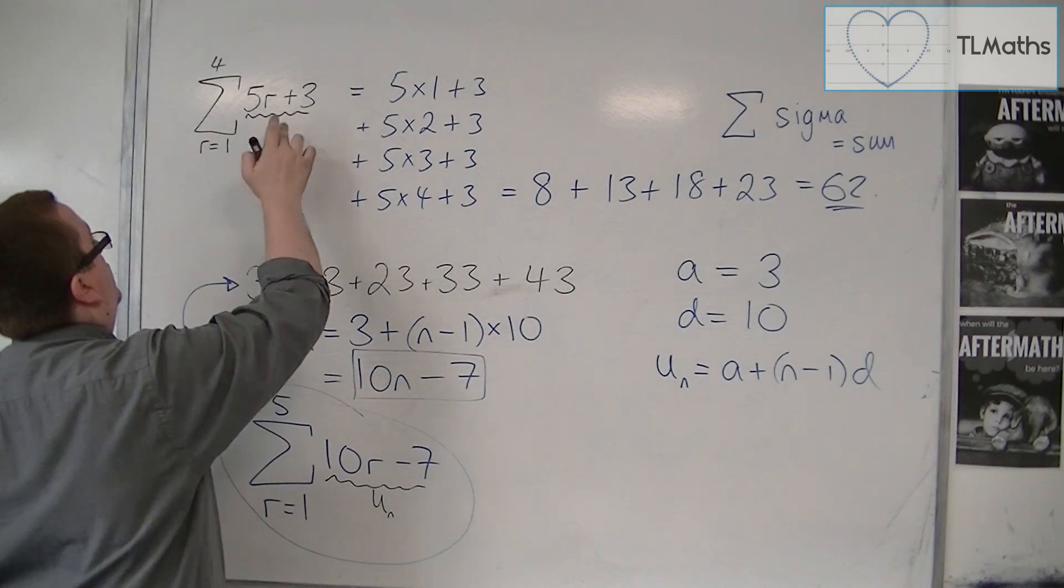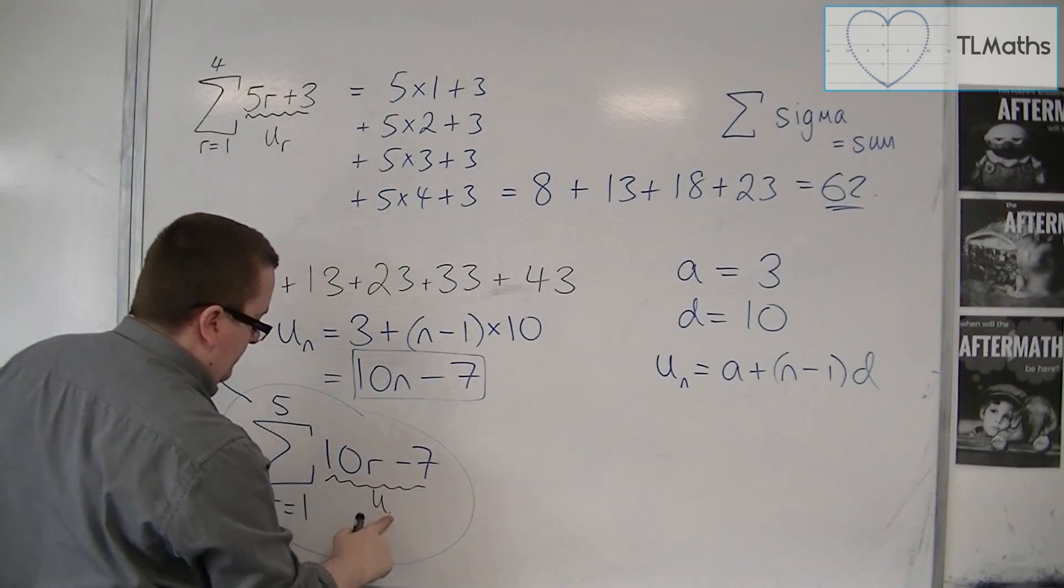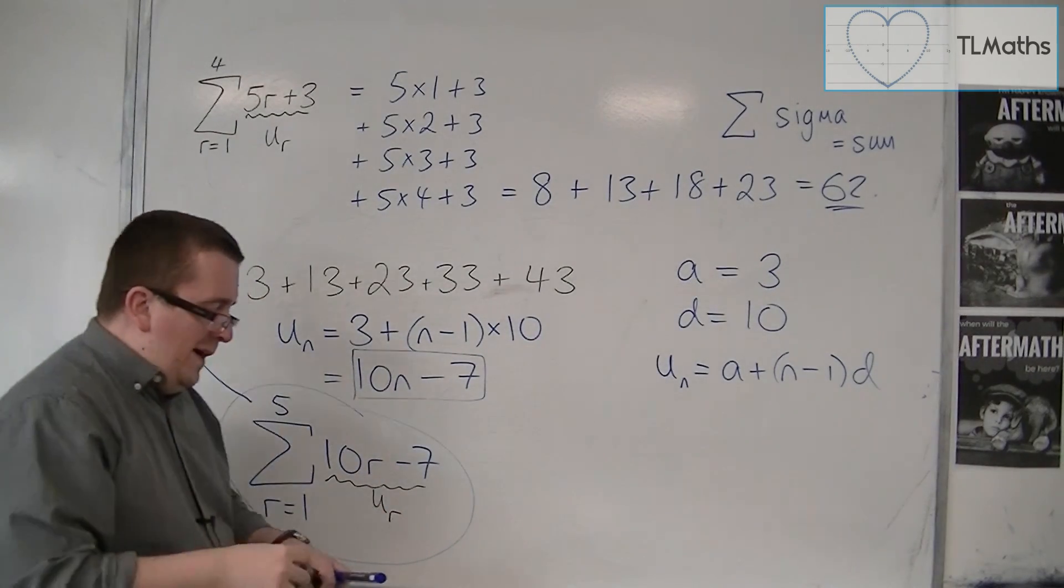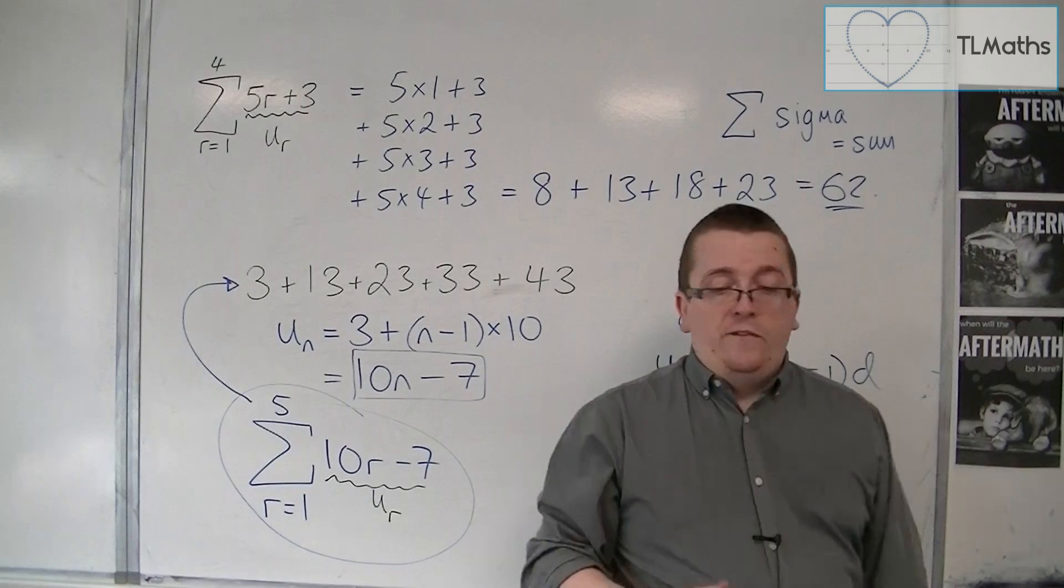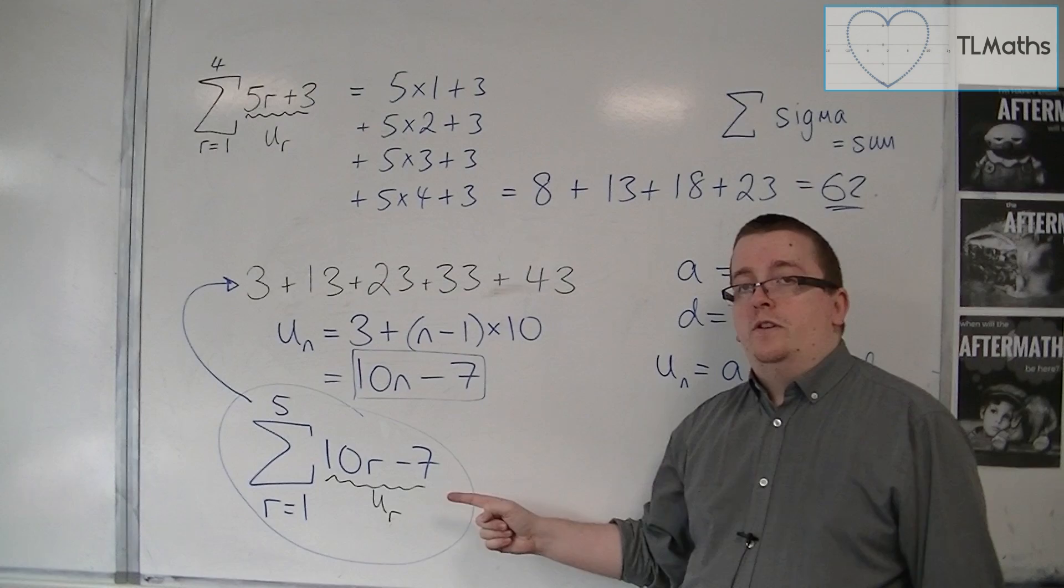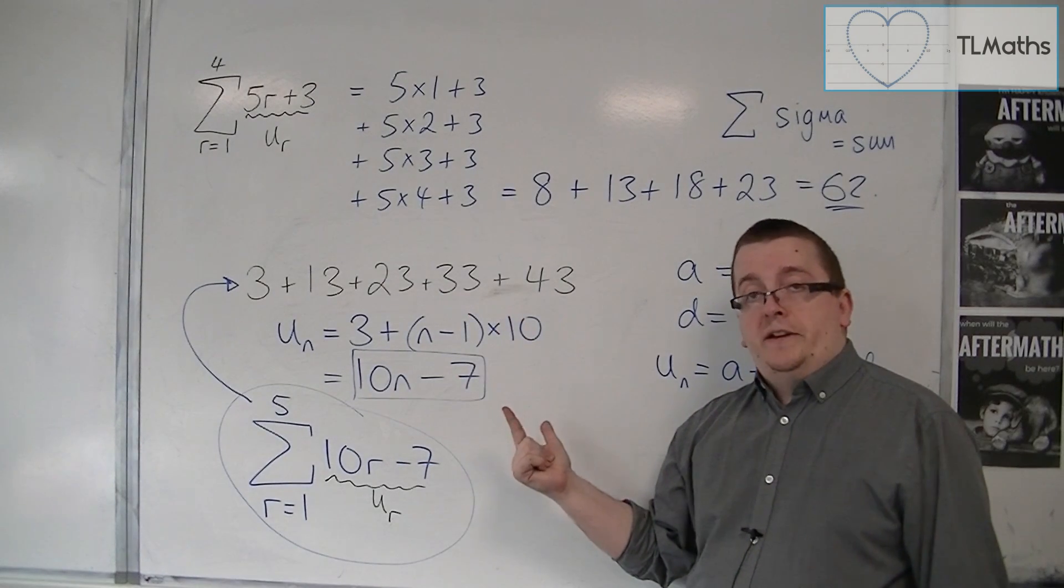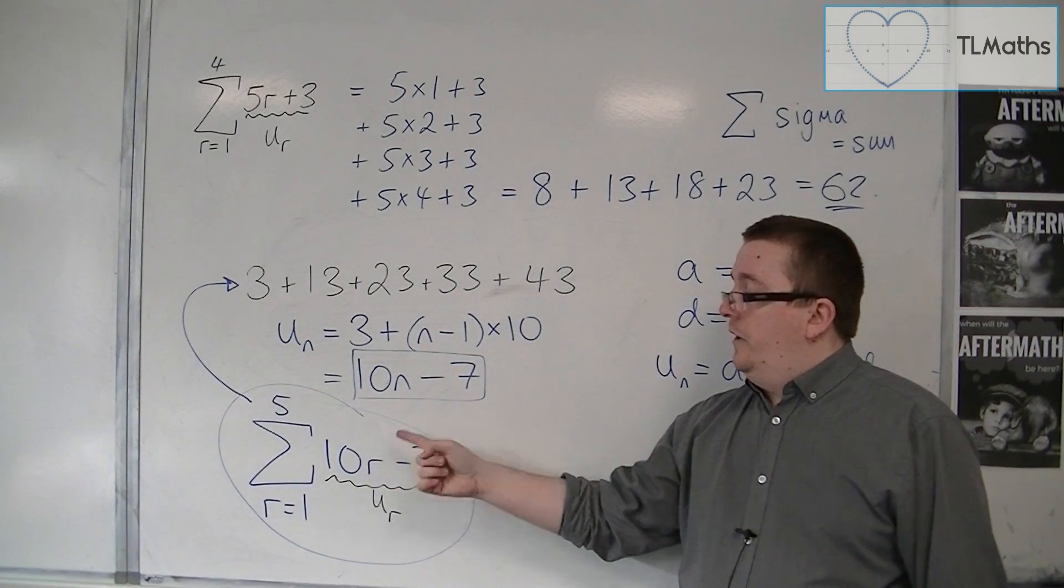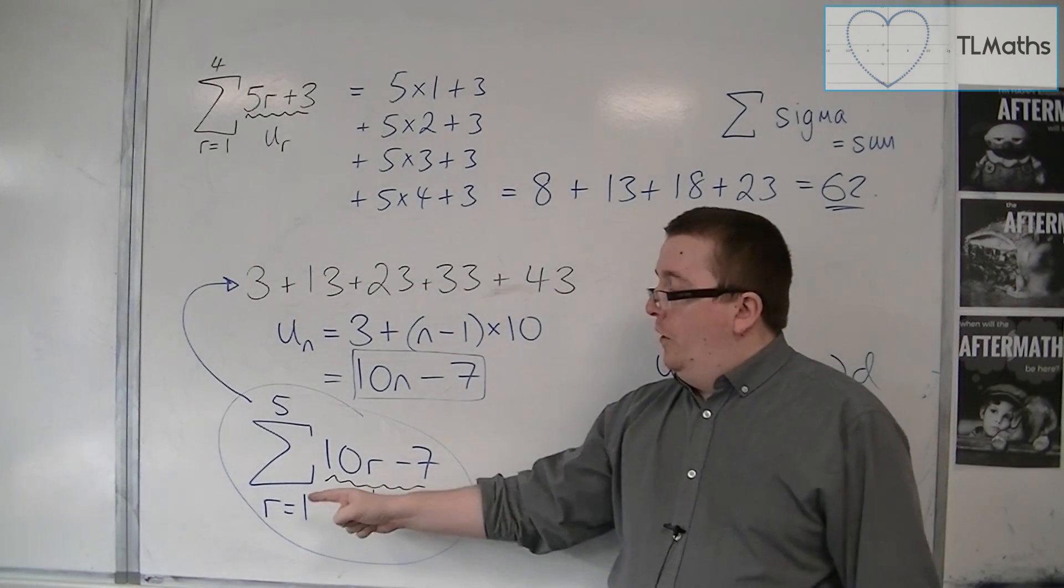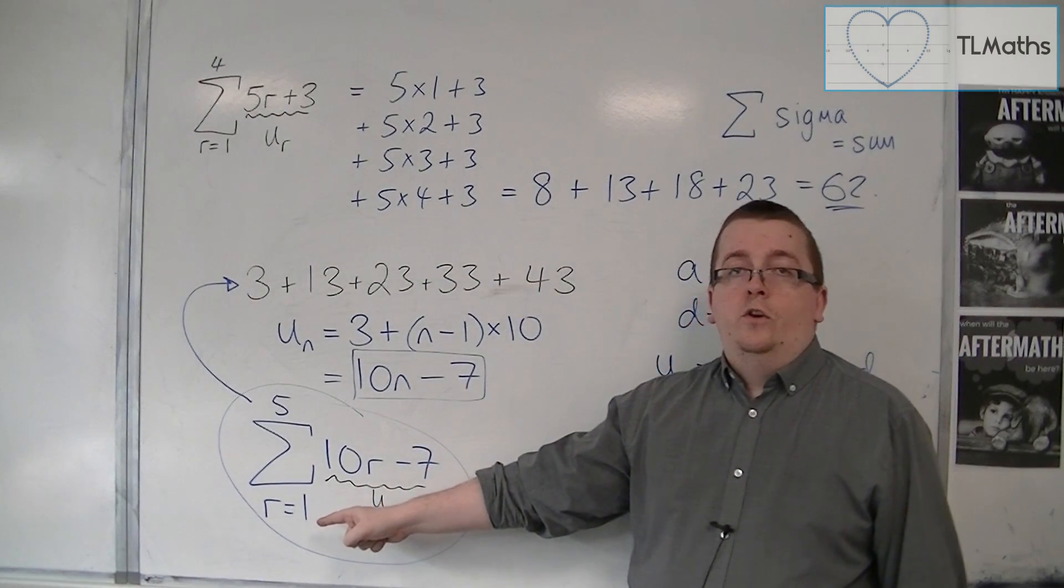So really, I should probably use ur here, rather than un. So they are always the nth term. And so if you are given a series that you need to put into sigma notation, find the nth term. That's what goes to the right of the sigma. And then you just need to figure out what is the first value of r that you're working with, and then what is the last.